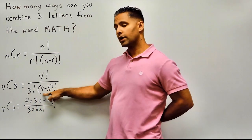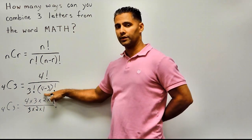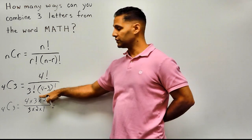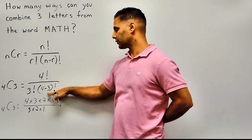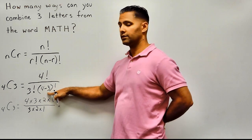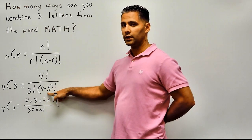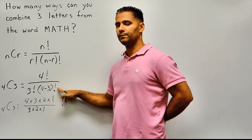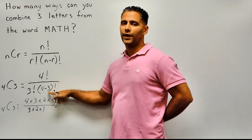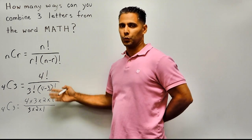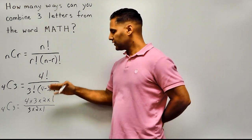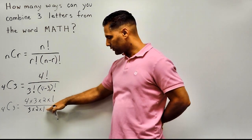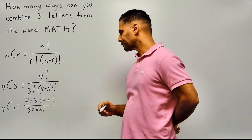Next, we subtract what's inside the parentheses, which is four minus three — that's a difference of one. Then we would do one factorial, but one factorial is just one, and it's unnecessary to write that in this case.